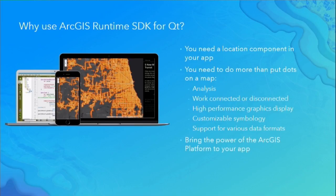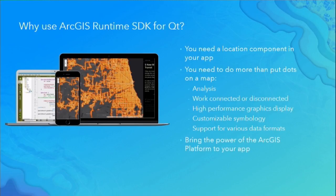Why would you want to use the ArcGIS Runtime SDK for Qt? Because you want to take advantage of Qt's cross-platform capabilities but bring the location component into your application. Qt has location and mapping built in for basic things like geocoding, routing, and displaying base maps. But often you need something more advanced — analysis, completely disconnected workflows, making edits and syncing back to services, custom symbology from ArcGIS Pro, or support for data formats like WMS, shapefiles, or other OGC standards.